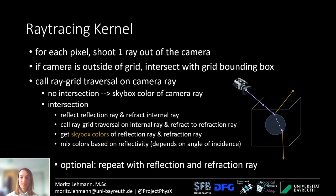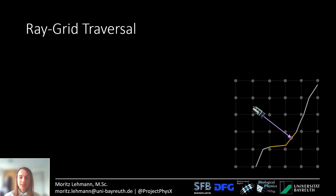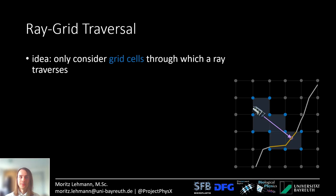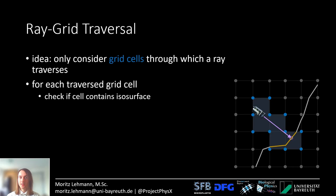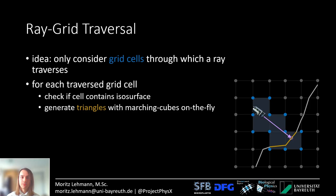As an optional step, you can repeat the entire procedure with the reflection and refraction ray — calling ray grid traversal again and computing several reflections and refractions. Now let's look at ray grid traversal, the acceleration structure that makes this all possible. The idea is to only consider grid cells through which the ray traverses. For each traversed grid cell, you first check if it contains an isosurface, and if it does, you generate the triangles with marching cubes on the fly.